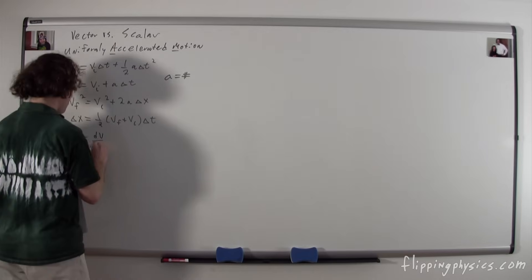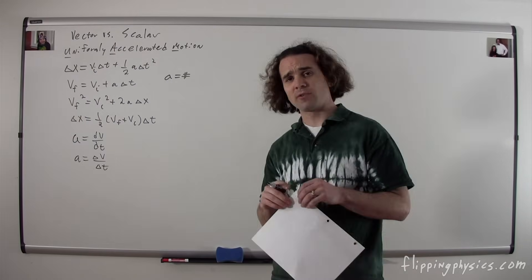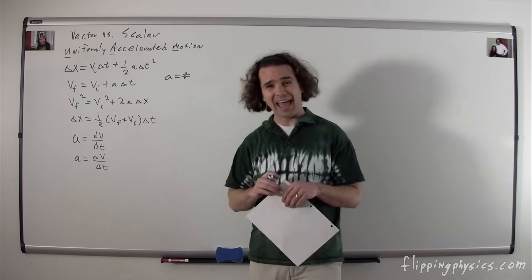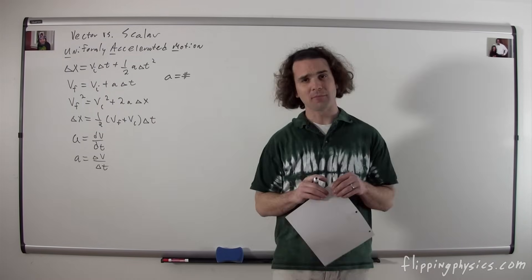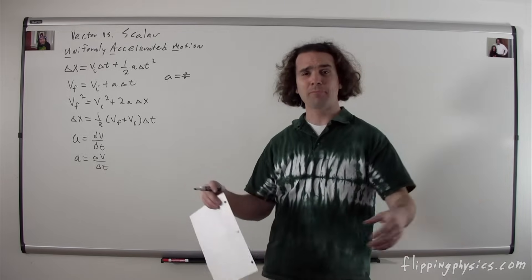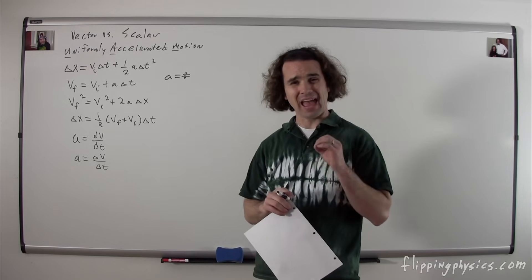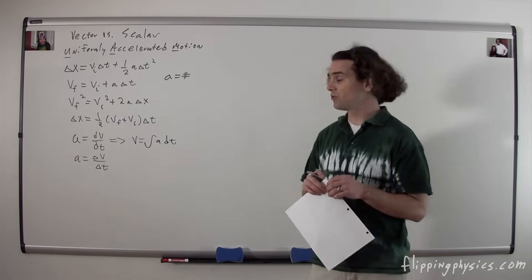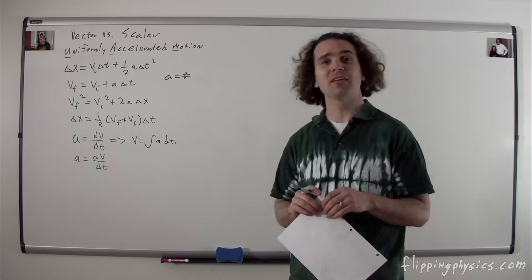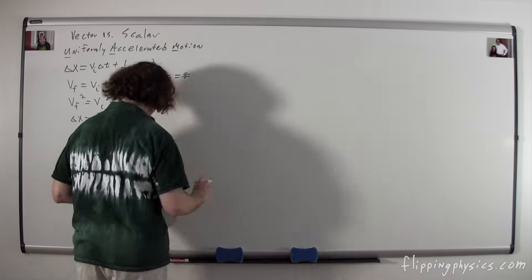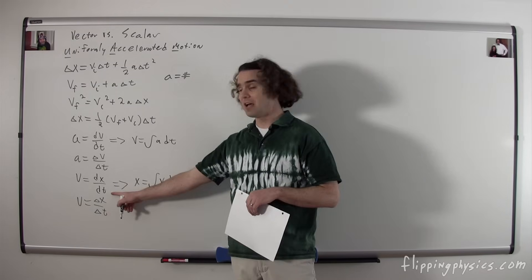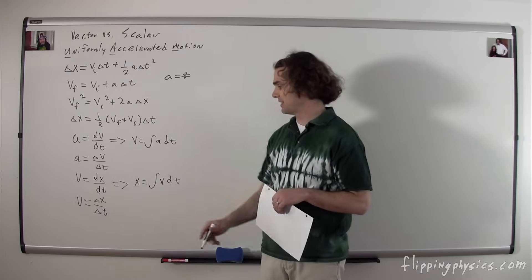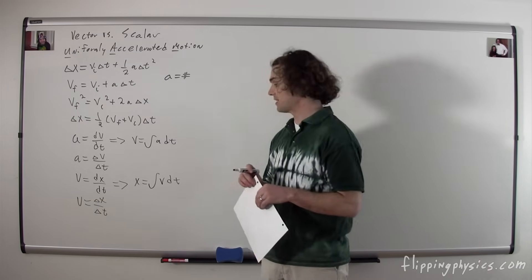Next, we're going to talk about acceleration. There are actually two equations for acceleration: acceleration equals the derivative of velocity as a function of time, and acceleration equals the change in velocity over change in time. The derivative gives the instantaneous acceleration, while the change in velocity over change in time gives the average acceleration over a time period. Remember that with any derivative you can rearrange it to get an integral — so velocity is also equal to the integral of acceleration as a function of time. Similarly, instantaneous velocity is the derivative of position as a function of time, and average velocity is the change in position over change in time, so position equals the integral of velocity with respect to time.